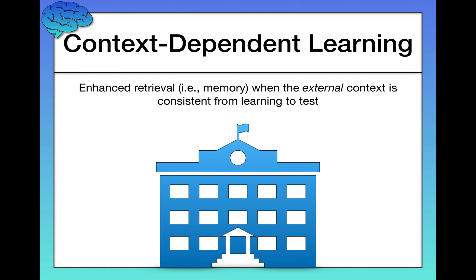Context-dependent learning is enhanced retrieval — superior memory — when the external context is consistent from learning to test. If you do all your studying at a library, it would be ideal to also take your test at the library. When you're tested in a different context, none of the cues are the same — the room, the people, even the smells differ. And it turns out those tiny cues, like how something smelled when you learned it, actually make it easier to recall that information.